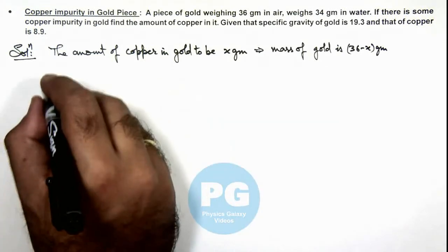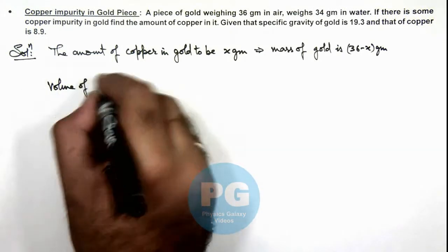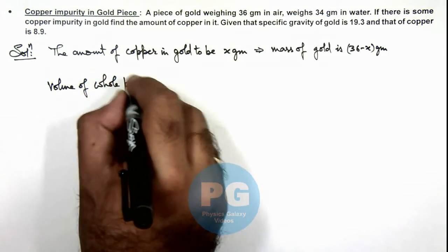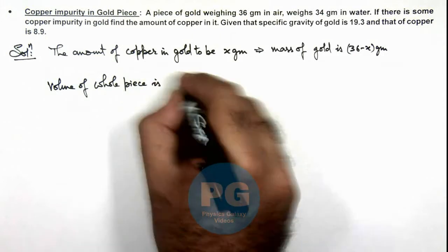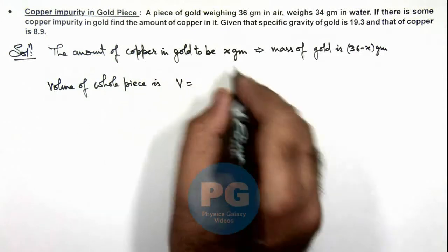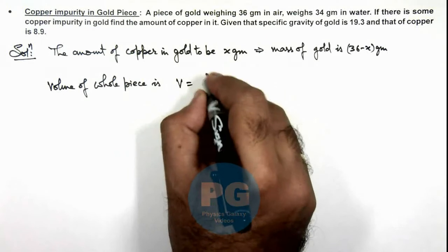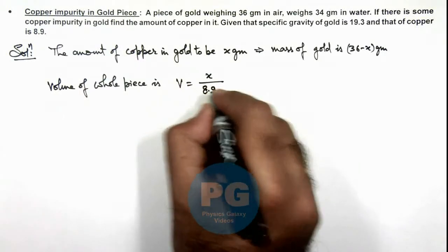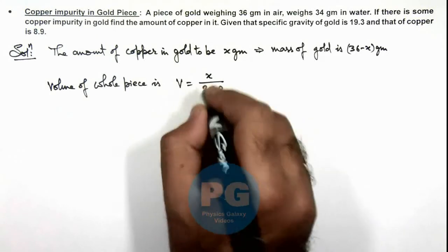So here we can write the volume of the whole piece. This volume we can write as: x grams is the mass of copper, so its volume will be x divided by 8.9 times ρ of water, which is the density of copper.